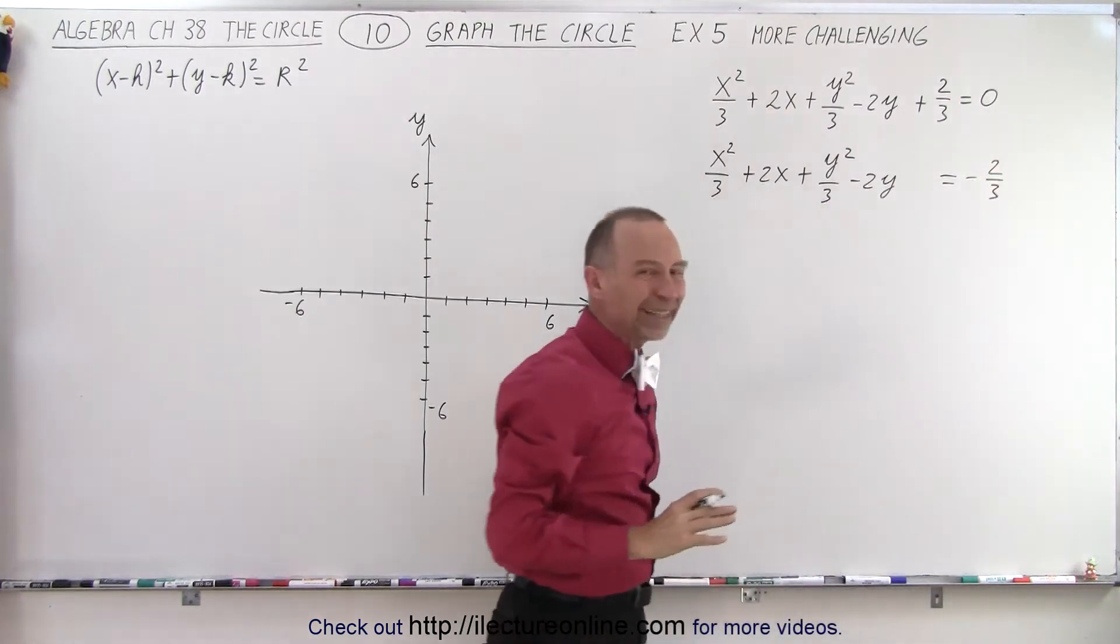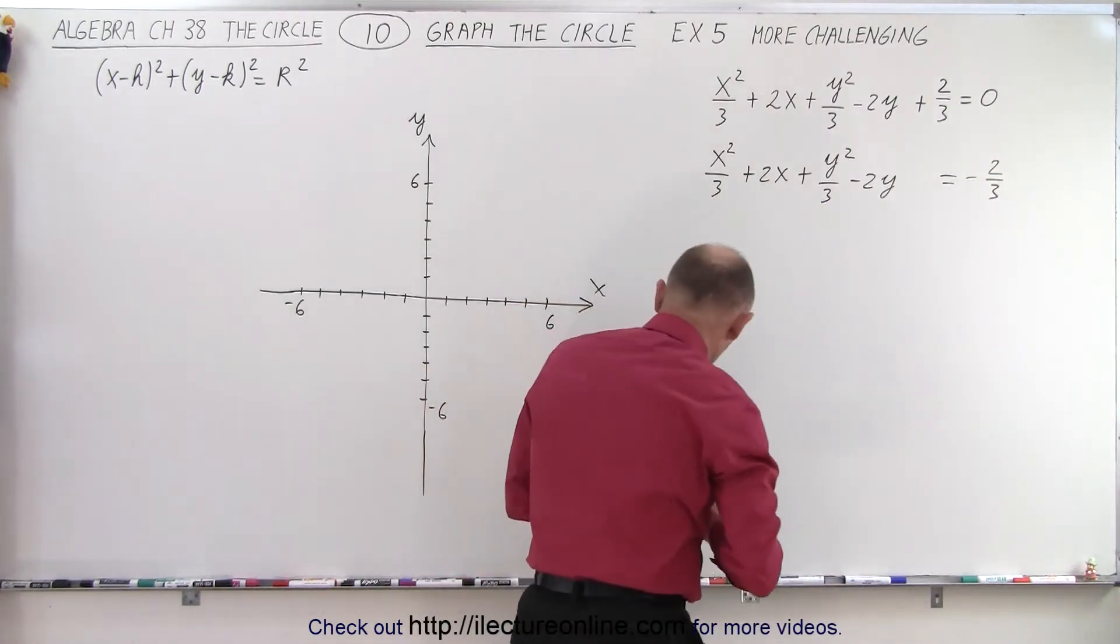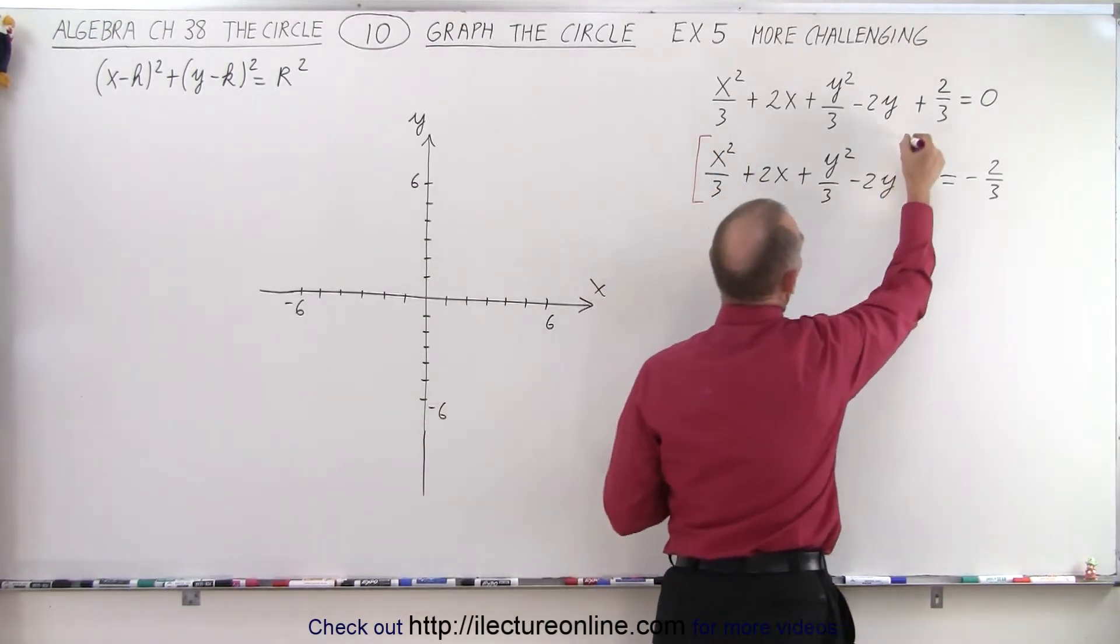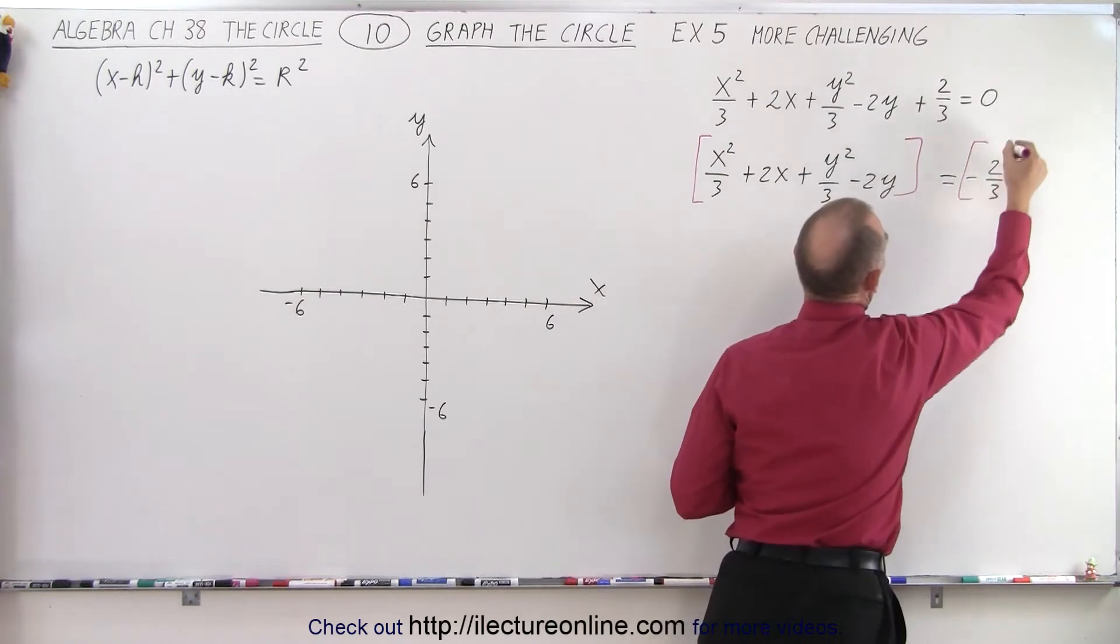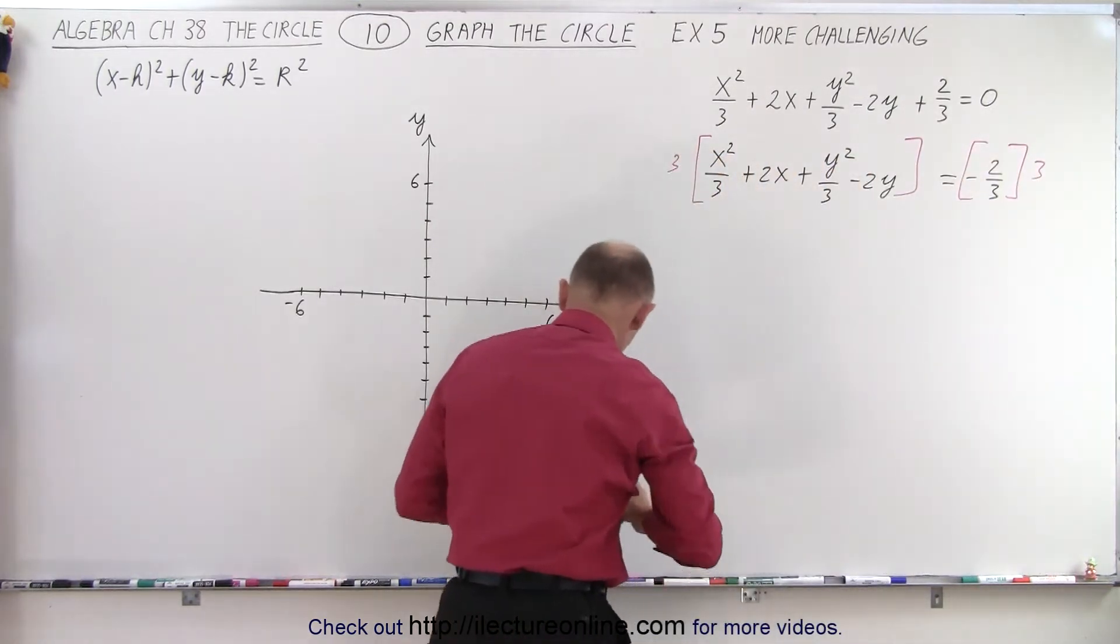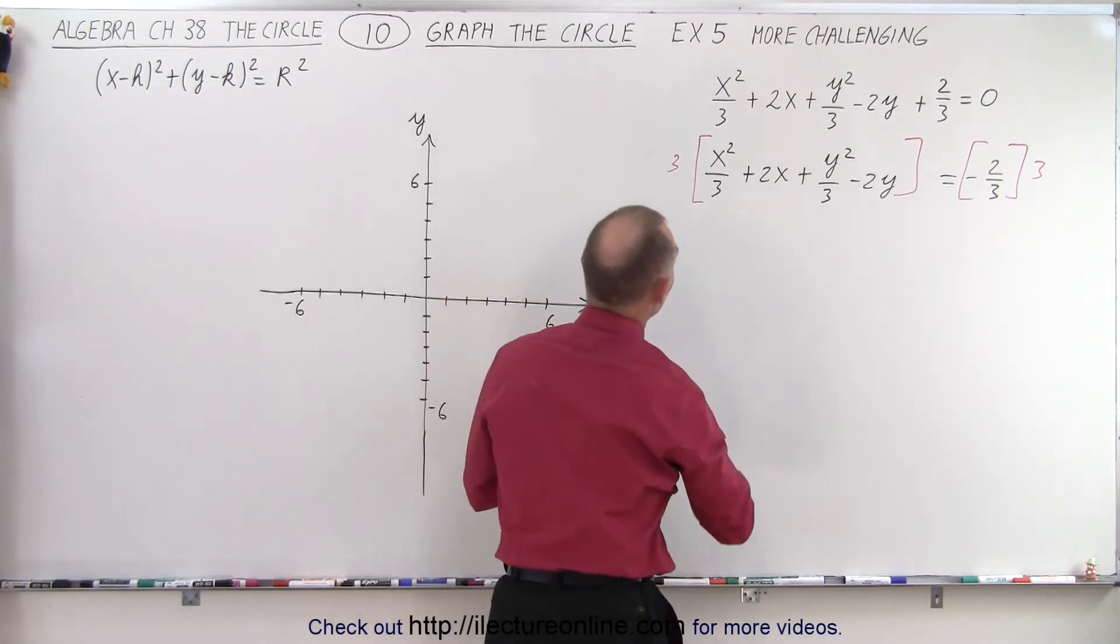And then we want to get rid of that 1 third. What we want to do here is we're going to multiply both sides of the equation by 3. And when we do that, we get rid of these fractions. So let's go ahead and do that. So the next thing we do is get this.